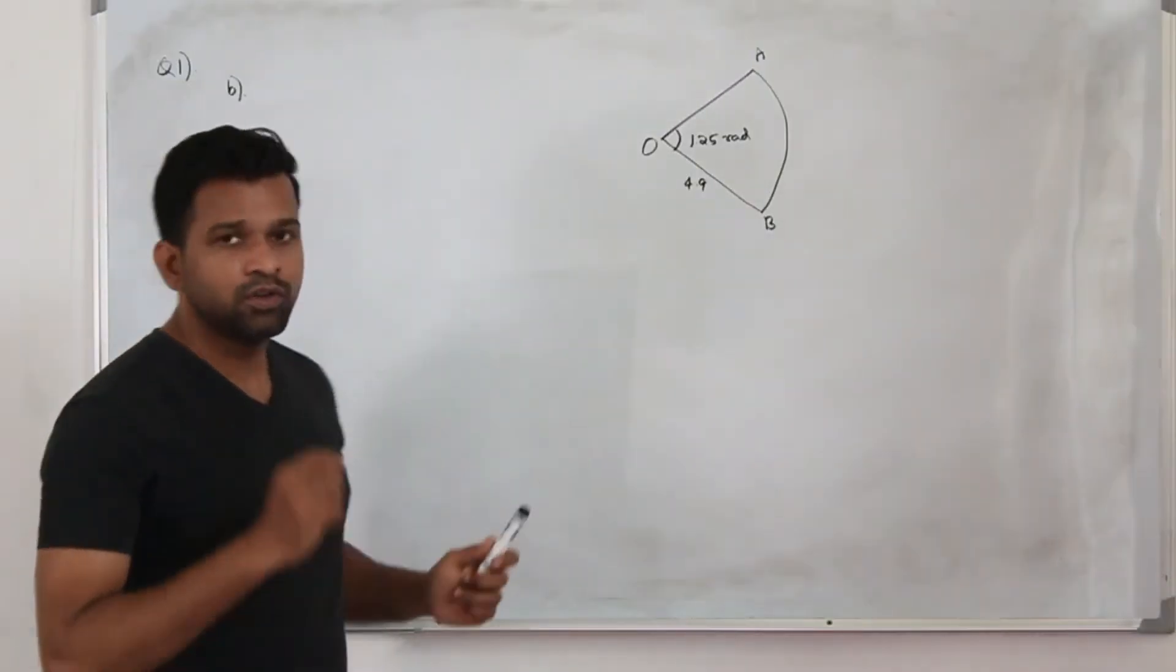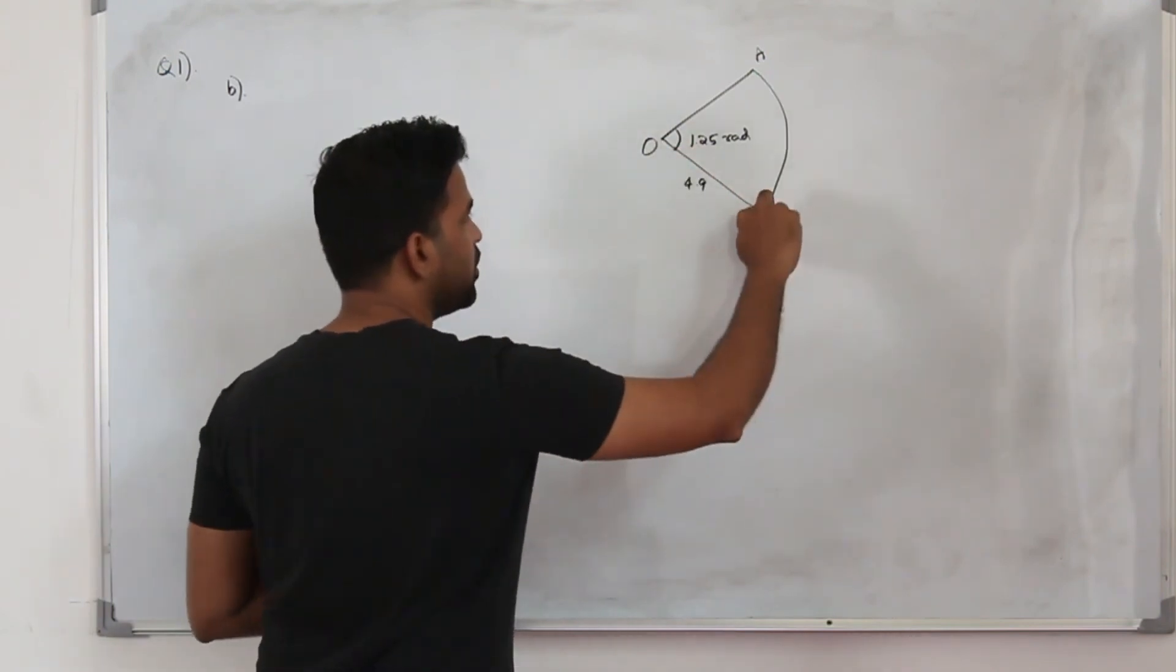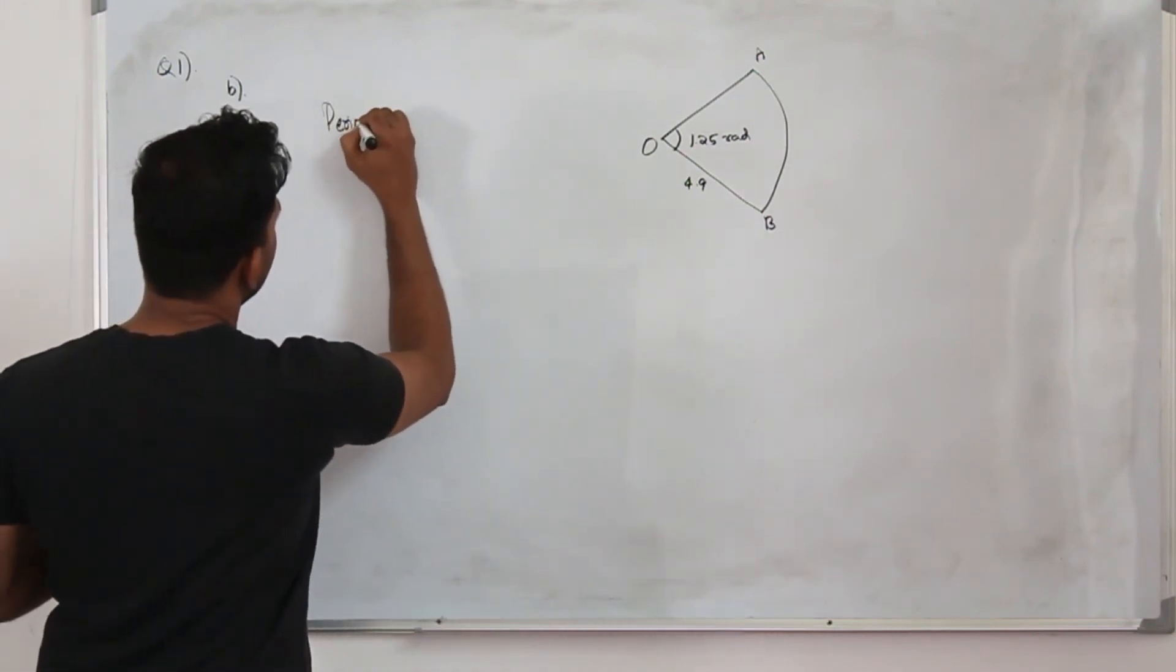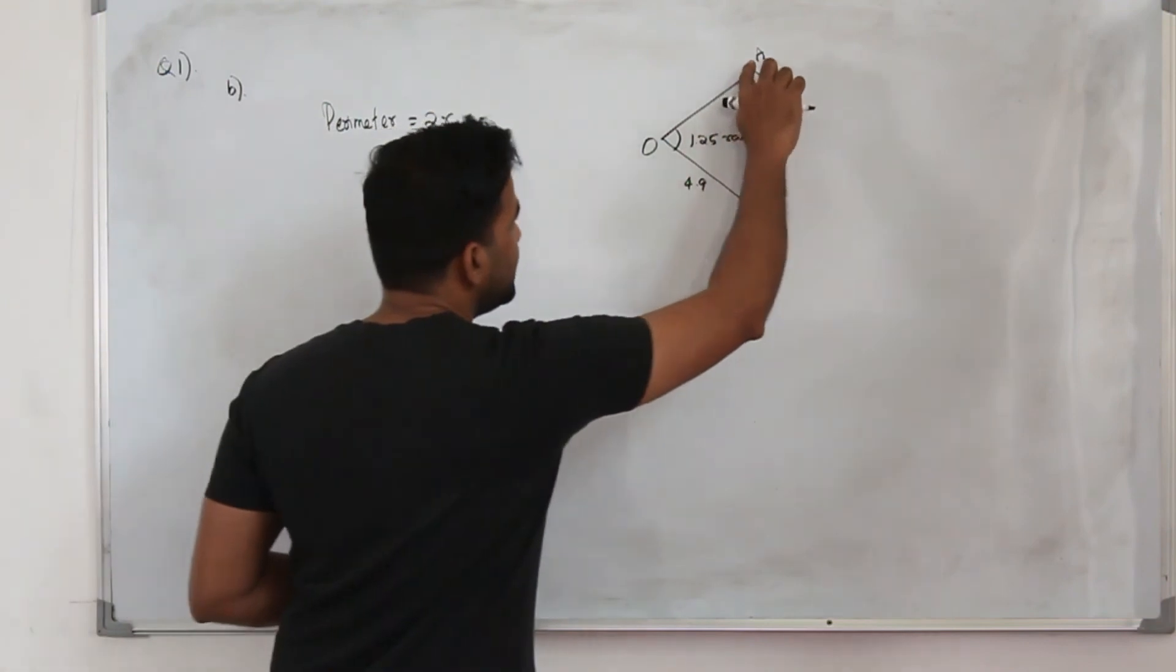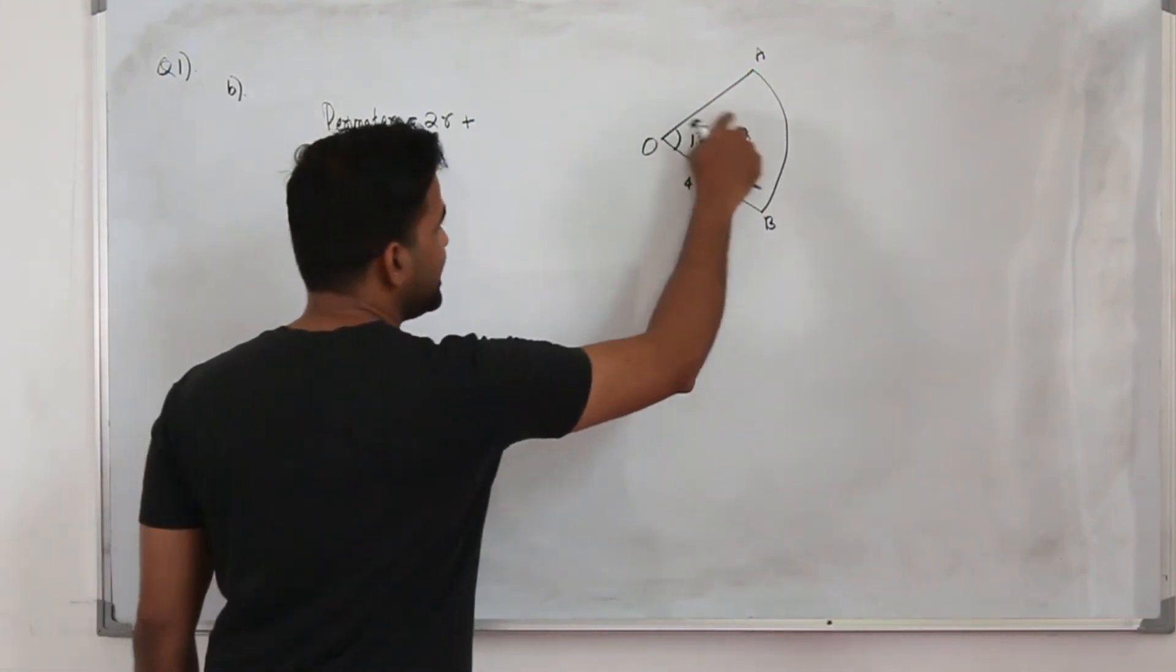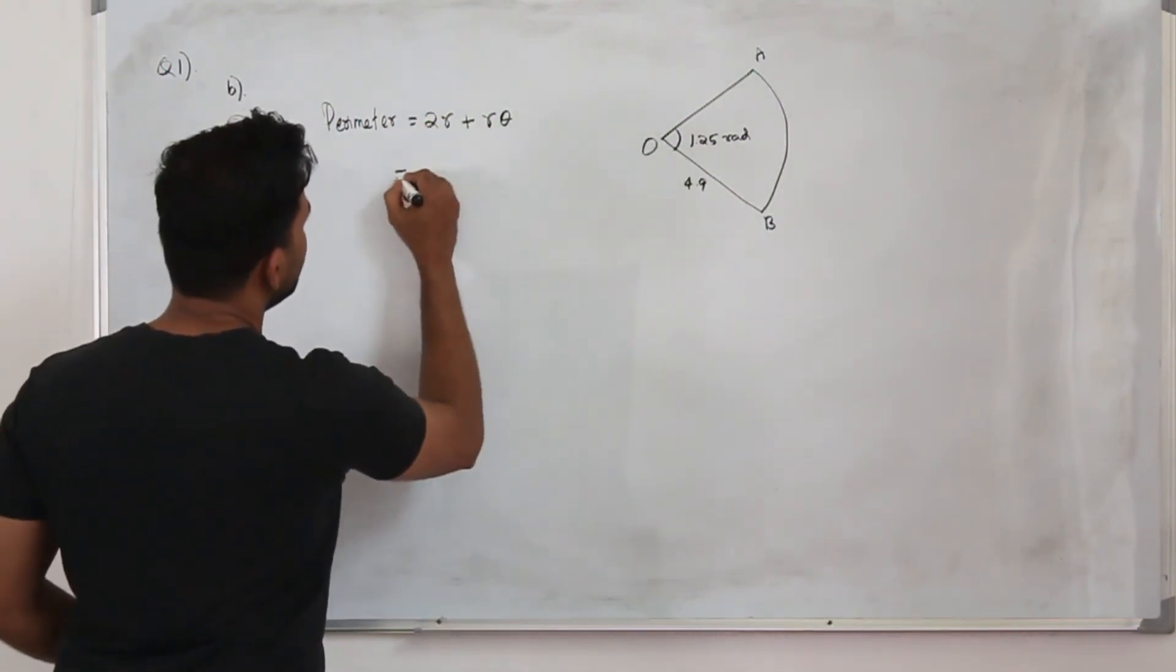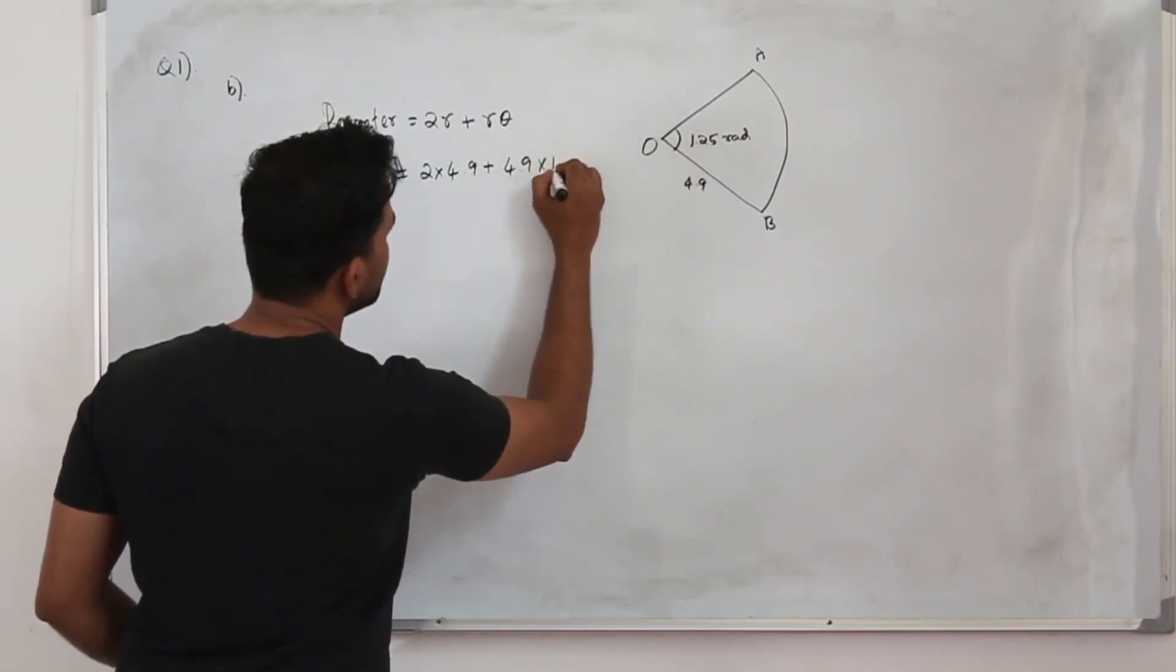In part B, they want you to find the perimeter of this sector. Perimeter means you need to add all the boundary lengths. This radius we already got in part A, which is 4.9. So the perimeter will be: perimeter equals radius plus another radius—two times radius—plus the length of arc, this arc AB. So the arc length formula when your theta is in radian is R theta. That's the formula to find the arc length.